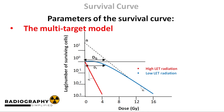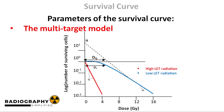Another parameter in the multi-target model is the extrapolation number, N. This represents the width of the shoulder of the curve — a large extrapolation number means the shoulder is broad, and vice versa. Another parameter that also represents the width of the shoulder is the quasi-threshold dose, DQ. By definition, it is the dose at which the straight portion of the survival curve, if extrapolated backwards, would cut the dose axis through a surviving fraction of unity.